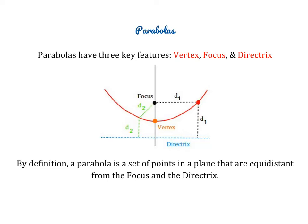When we are working with parabolas, we're going to work with these three key features, which is the vertex — which you should already know, we've used that in the past — but these two extra ones are new. The first is called the focus, and this point right here is the focus. The last is the directrix, which is actually a horizontal or vertical line — in this case, this is the directrix.